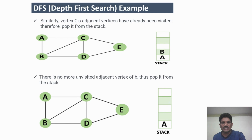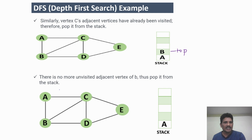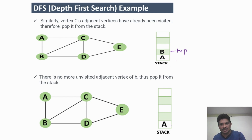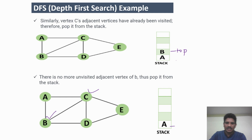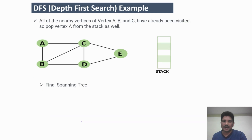Next, B is the top of the stack. Check whether any other vertices of B have not been visited — the adjacent vertices are A, C, and D. Since all nodes have been visited, remove B from the stack. Next, A is at the top. Check any other adjacent nodes of A that have not been visited — B and C are both visited — so there is no other vertex to visit, and pop A from the stack.